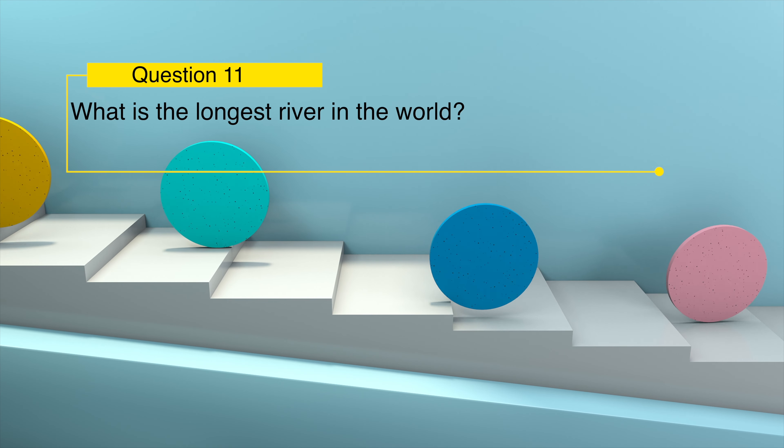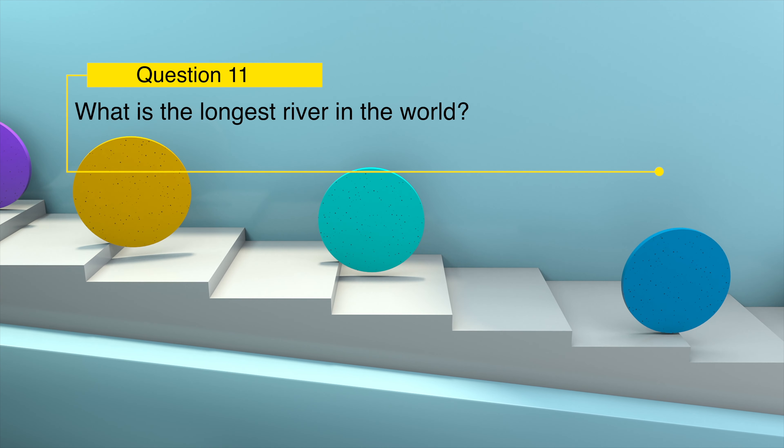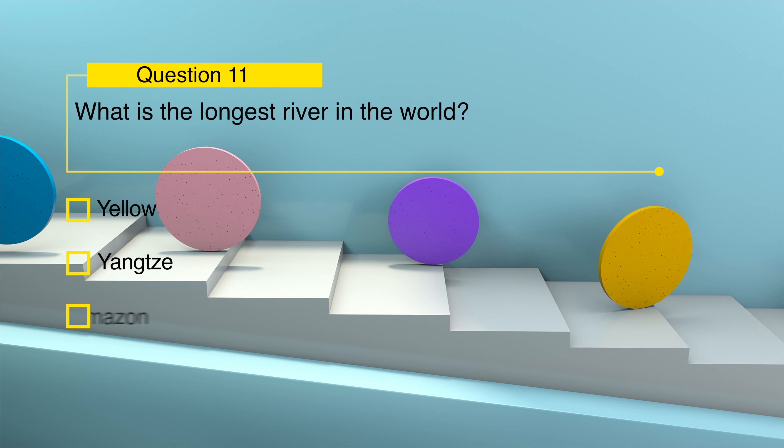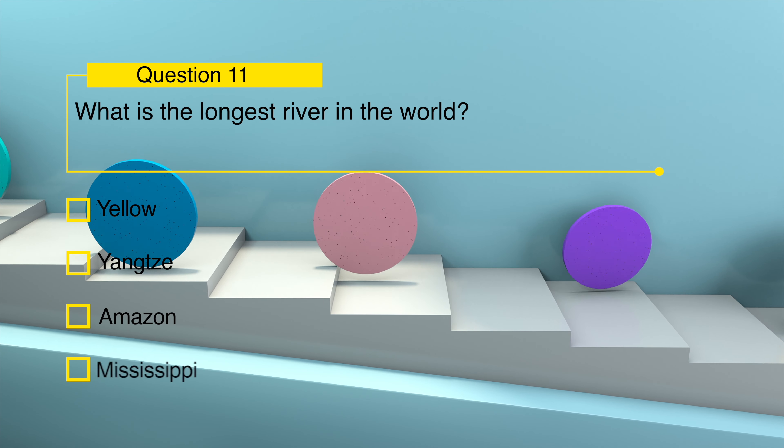What is the longest river in the world? Yellow, Yangtze, Amazon, or Mississippi?